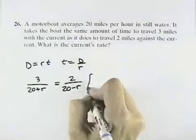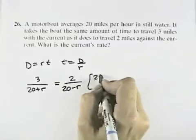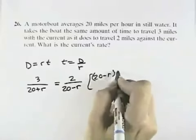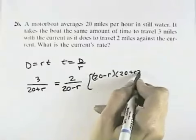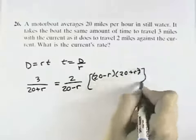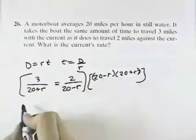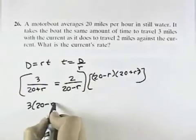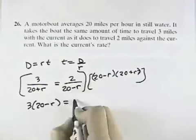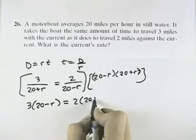We're going to need to multiply both sides of our equation by 20 minus R times 20 plus R. That's the least common denominator. So if we multiply both sides, on the left, the 20 plus R cancel, leaving 3 times 20 minus R. On the right, the 20 minus R cancels, leaving 2 times 20 plus R.